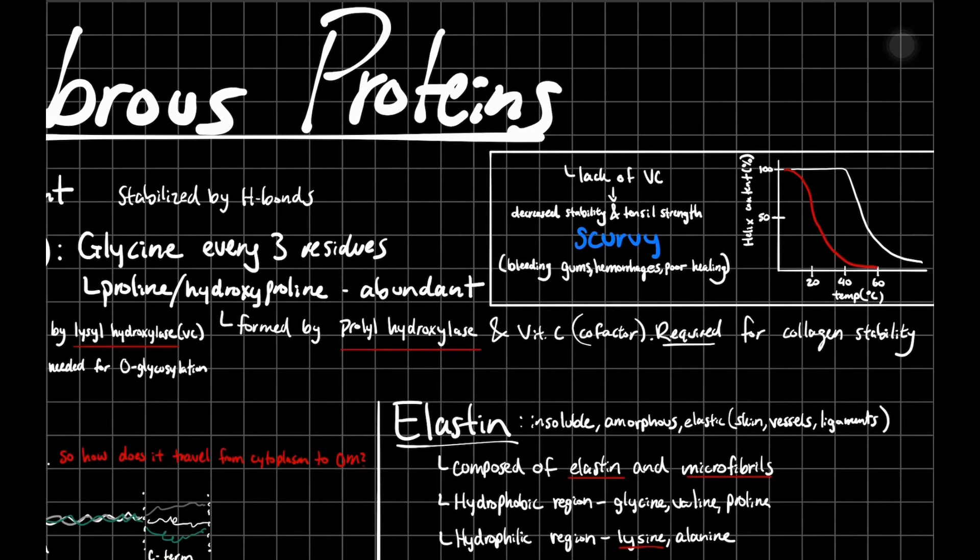Now the triple helix structure is going to have a glycine for every three residues. Keep in mind this is a very tight helix, so you need bends in it. The best way to get bends are going to be glycine and prolines. So you can imagine why you'd need a glycine every three residues. Then it's interspersed with a lot of proline and hydroxyprolines. The hydroxyproline residues are going to be formed by prolyl hydroxylase. Prolyl hydroxylase hydroxylates a proline residue, and you need vitamin C as a cofactor.